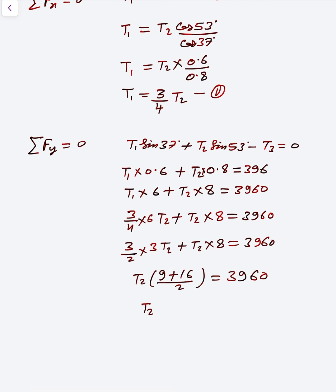If T2 is common, then 9 plus 16 equals 25. So T2 is 2 × 3960 divided by 25, which equals 316.8 Newtons. That is T2.